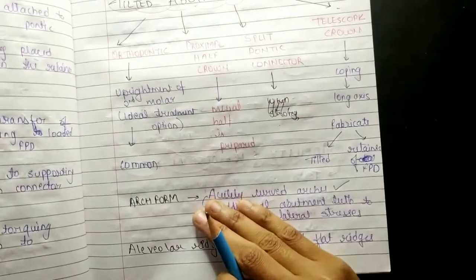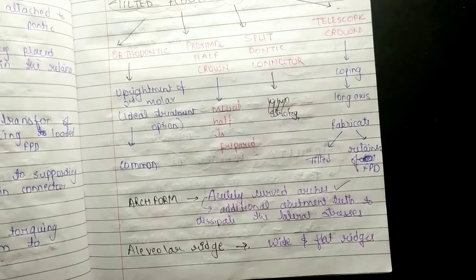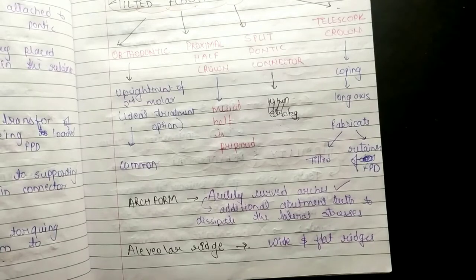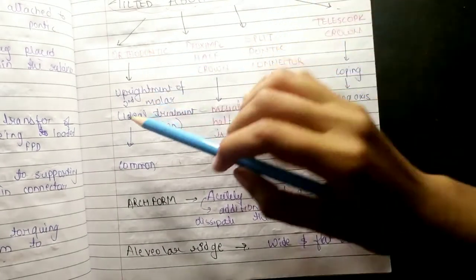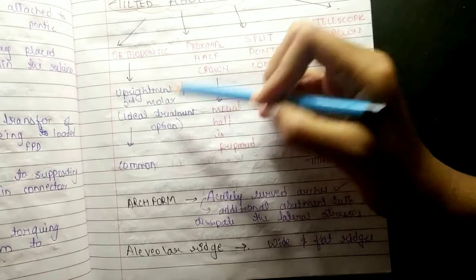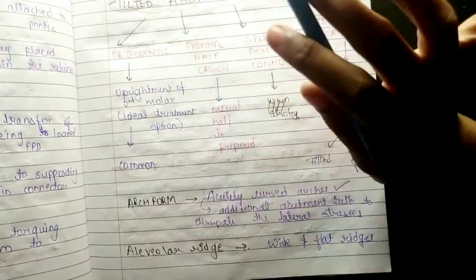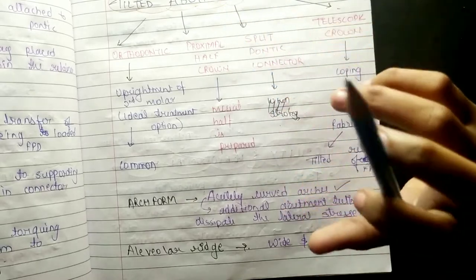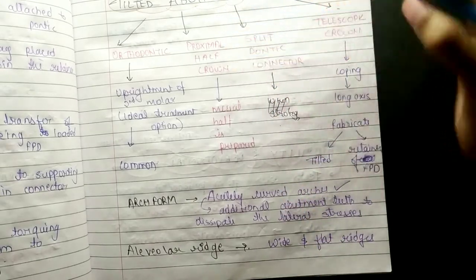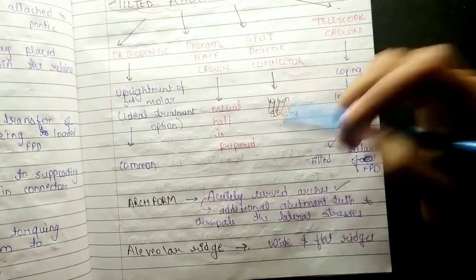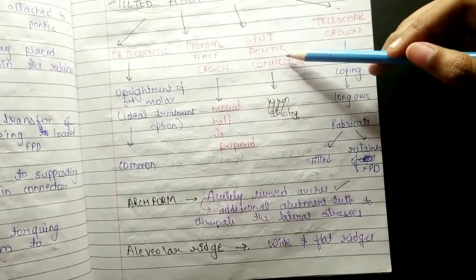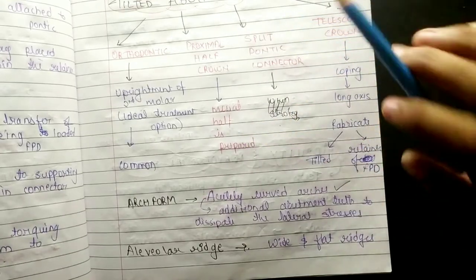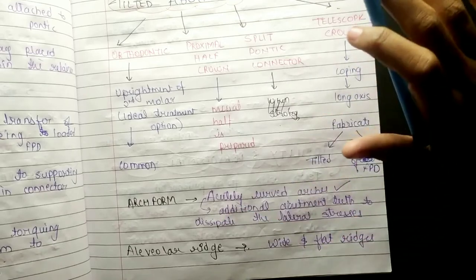Now coming to tilted abutment. For correction, orthodontic uprightment of the second molar is the ideal treatment option and is most common. Other options include a proximal half crown, where the mesial half is prepared, and a spring-pontic connector, which can be used for a tilted abutment.